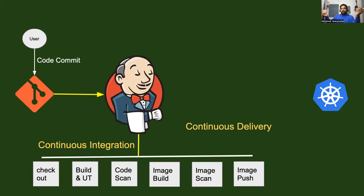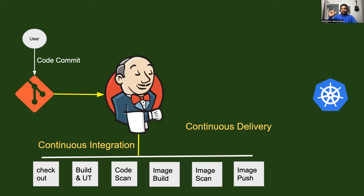If the interviewer asks how you write the pipeline, we use declarative Jenkins pipelines. It is always better to go with declarative Jenkins pipelines over scripted Jenkins pipelines because declarative pipelines are very easy to collaborate on, even with people who do not have enough knowledge of Groovy scripting.